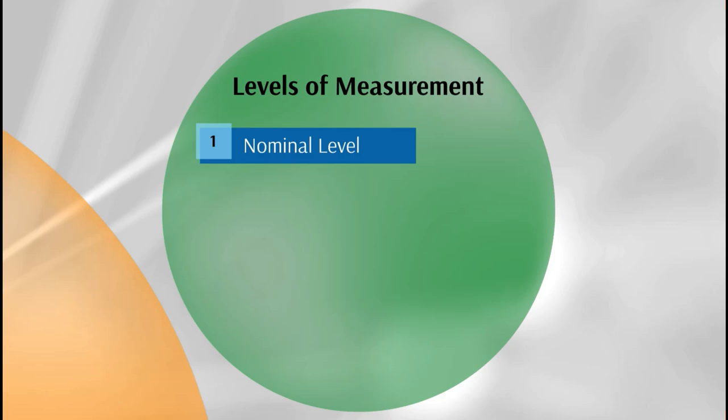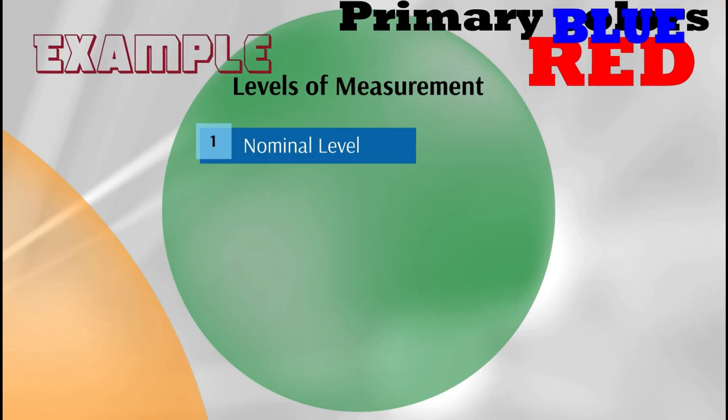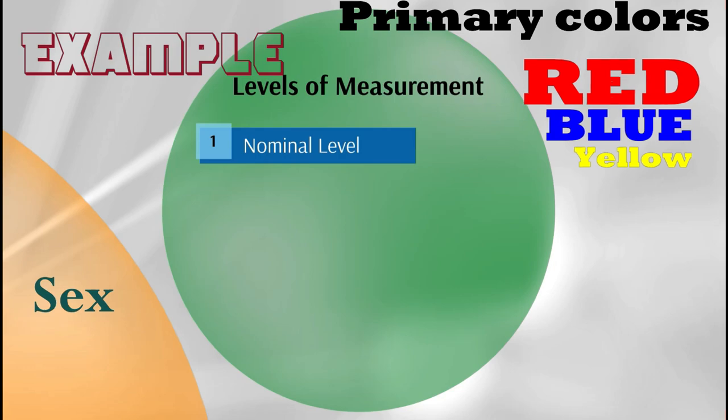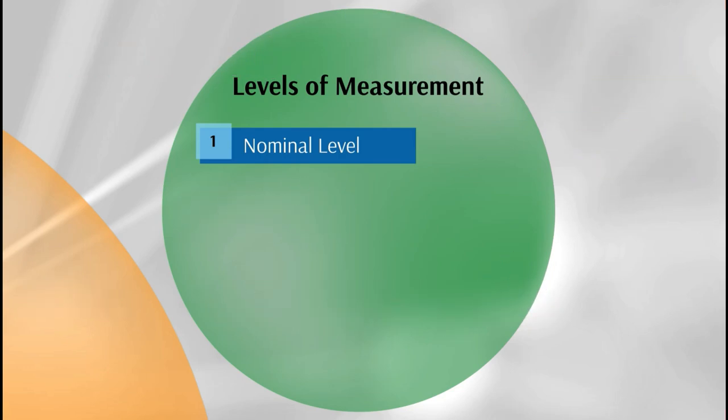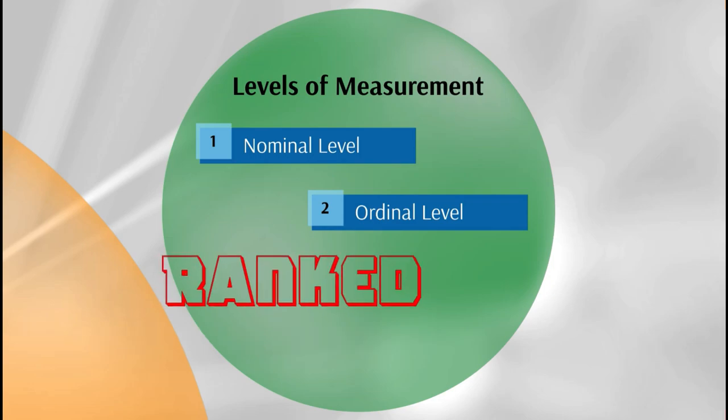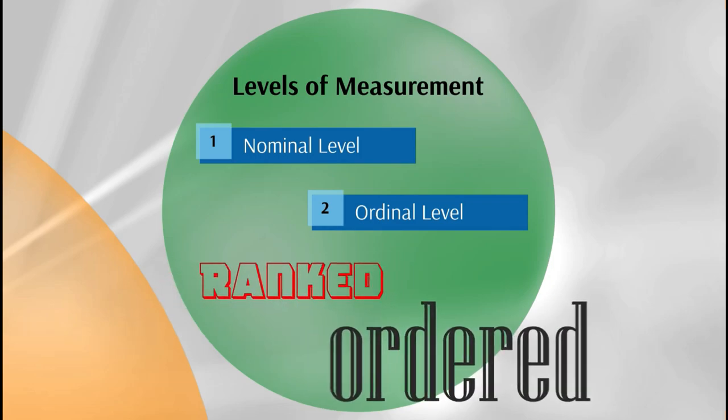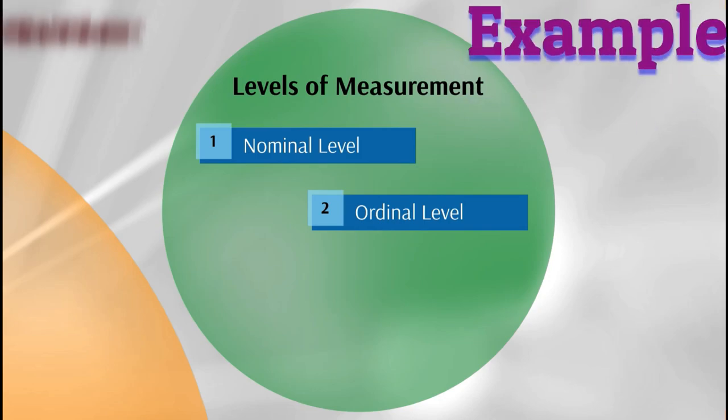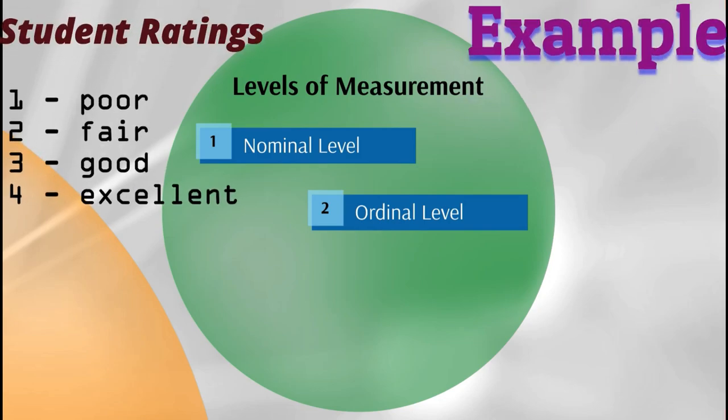Next we have the ordinal level. The ordinal level of measurement contains the properties of the nominal level and in addition the numbers assigned to categories of any variable may be ranked or ordered in some low to high manner. For example, student ratings: one poor, two fair, three good, four excellent.